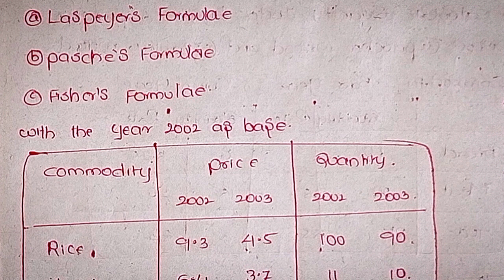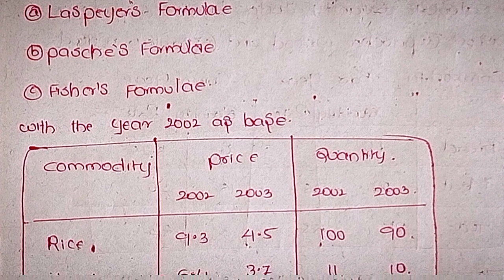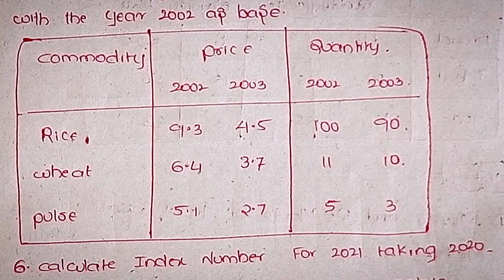With the year 2002 as base, commodity price and quantity data for Rice, Wheat, and Pulse: 2002 prices 9.3, 4.5, 6.4; 2003 prices 3.7, 5.1, 2.7; quantities 190, 11, 10, 53.